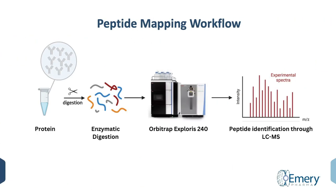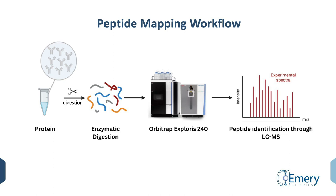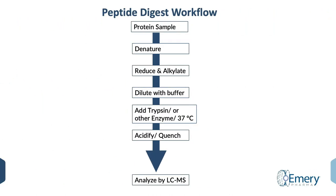In this method the protein sample is digested enzymatically and then injected into Emory Pharma's high field Orbitrap UPLC-MS system. The peptides are identified based on the observed versus expected molecular masses. In the peptide digest workflow, the protein sample is denatured followed by reduction and alkylation. The denaturation and reduction opens up the body of the protein to allow the enzyme to access and digest the inner areas of the protein. Alkylation then prevents the cysteines from recombining.